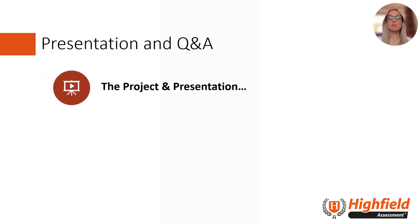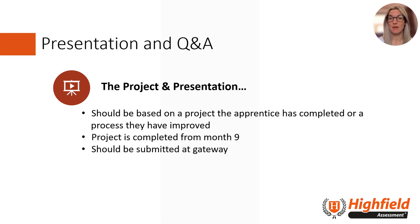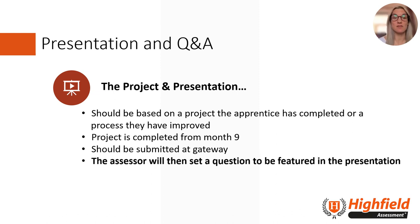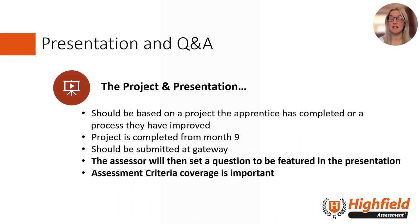The assessment plan dictates that the apprentice delivers a presentation on a project they've carried out or a process they have improved from month nine on programme. The project should be uploaded at Gateway. The assessor will then review it and set a question for the apprentice to answer by featuring it in their presentation. What we're finding is that some learners are not covering enough relevant criteria in the presentation — such as project management — meaning they need to cover an awful lot in the Q&A in the short time allowed. It's really key to ensure that the project aligns with the assessment criteria. The apprentice may have carried out an amazing project and be passionate about it, but if it isn't aligned with the criteria then this can be detrimental.